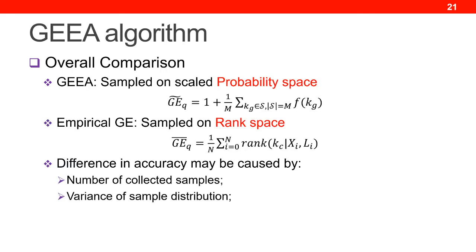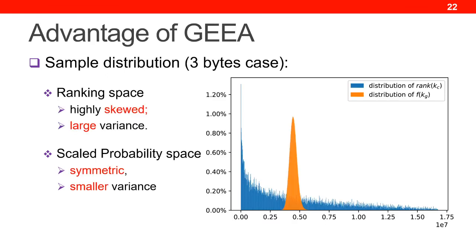GEA estimates GE in a somewhat similar way to empirical GE estimation, but GEA samples over the space of scaled probabilities while empirical GE samples over the rank space. The difference in accuracy between the two methods is caused by both the number of samples collected in a fixed time and the variance of the sample distribution. As shown in the figure, the variance of rank is much larger than the scaled probability. Moreover, the distribution of rank is much more skewed than that of the scaled probability, making it even harder to estimate the mean of rank than the scaled probability.